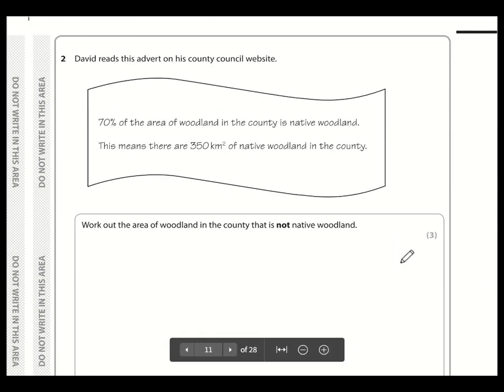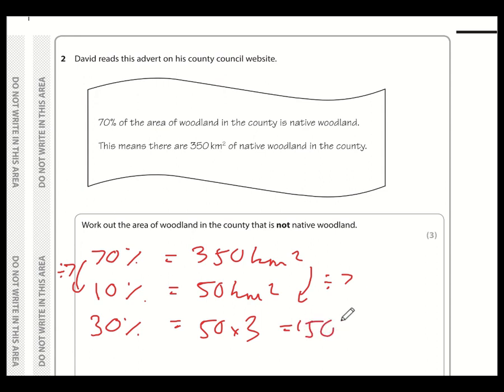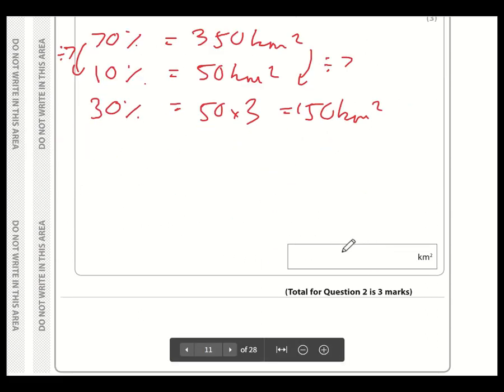Okay. Question number 2. So we need to make sure we read the question carefully here. This is not the total. We're not working out 70% of this amount. We know that 70% is 350 square kilometres. So if we want to work out the area that is not native woodland, then that is the other 30%. So what is 30% when 70% is 350? Now, both of these numbers are multiples of 10. So I'm going to work out 10%. Now, that is 7 times less than 70%. So I need to divide 350 by 7, which is 50. So if 10% is 50 kilometres squared, 30% is going to be 50 times by 3, which is 150 square kilometres. Quite a tricky one, that one. So 150.